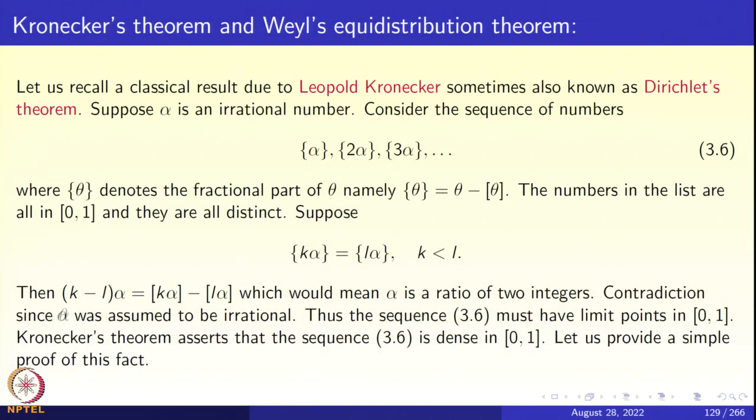Let us recall the classical result due to Leopold Kronecker, also known as Dirichlet's theorem in some books. Suppose alpha is an irrational number. Consider the sequence of numbers: fractional part of alpha, fractional part of 2 alpha, fractional part of 3 alpha, etc., where the brace bracket denotes the fractional part of theta. You simply take the integer multiples of alpha, take their fractional parts — that is, go modulo 1, subtract the integer part and get the fraction.